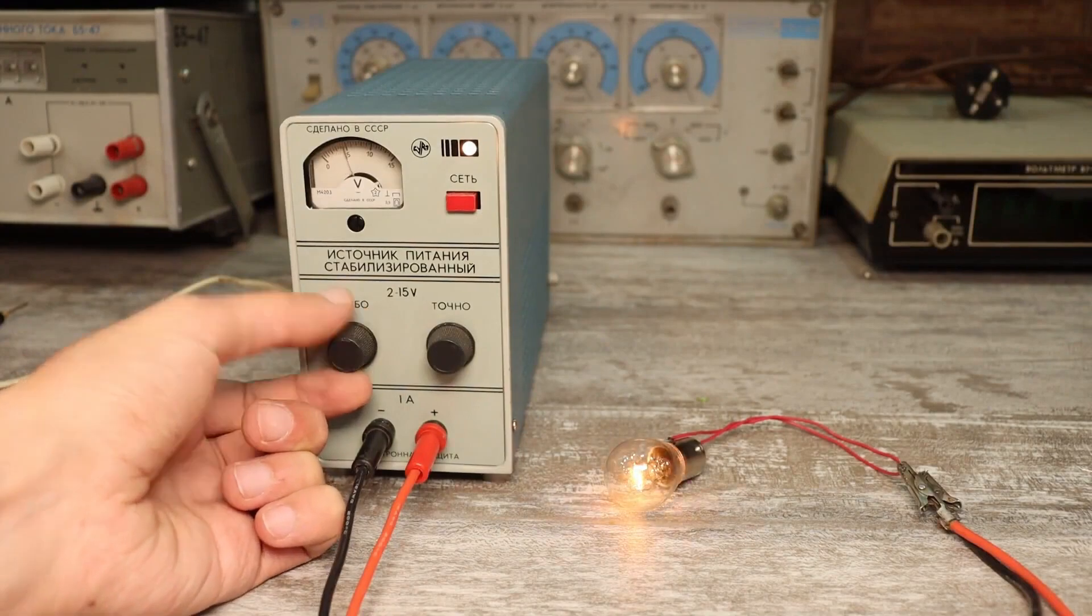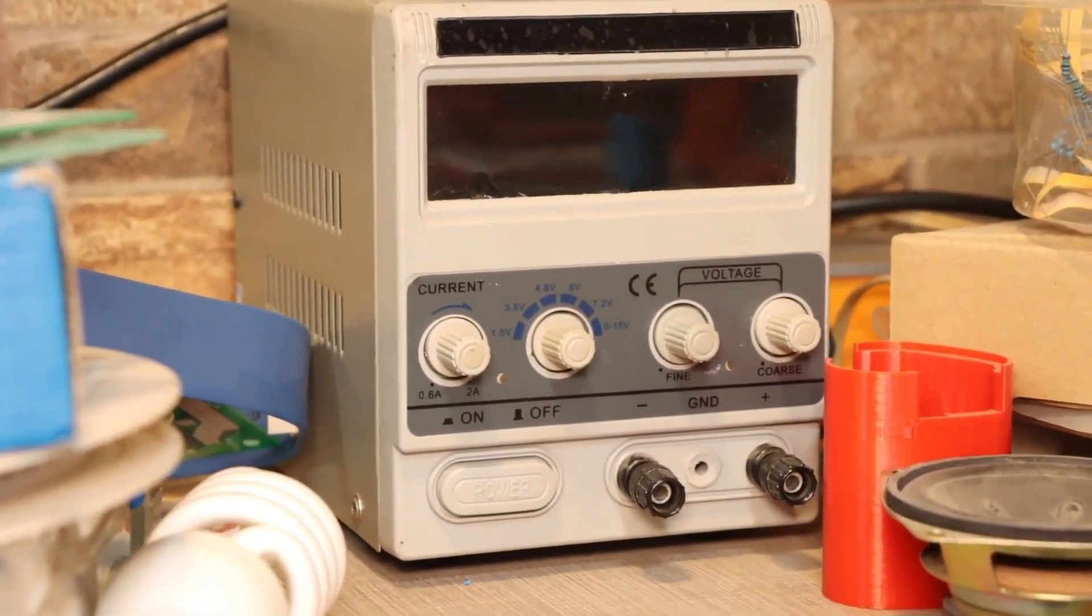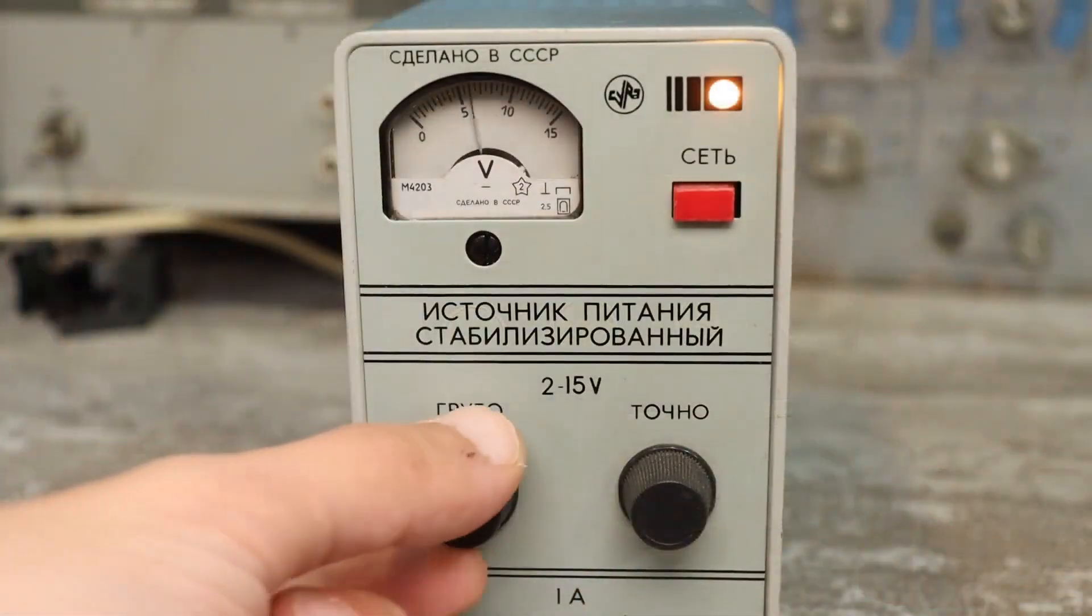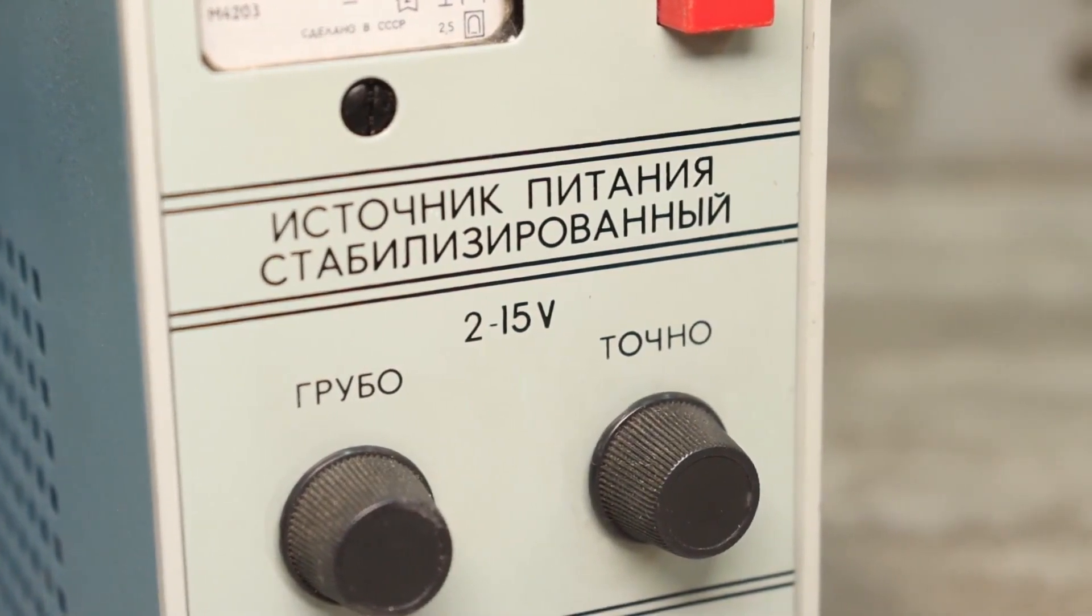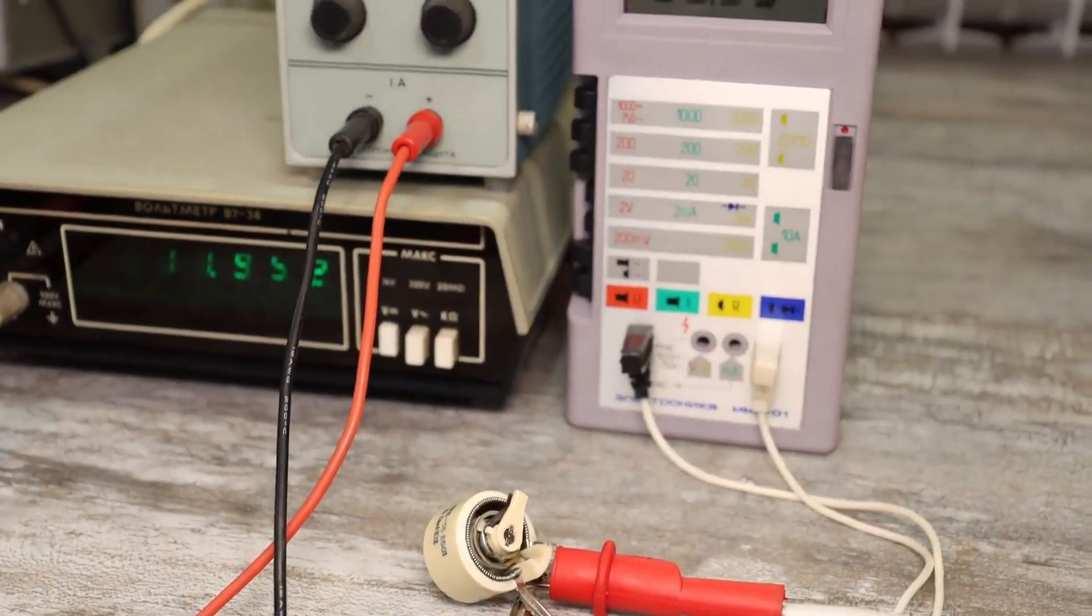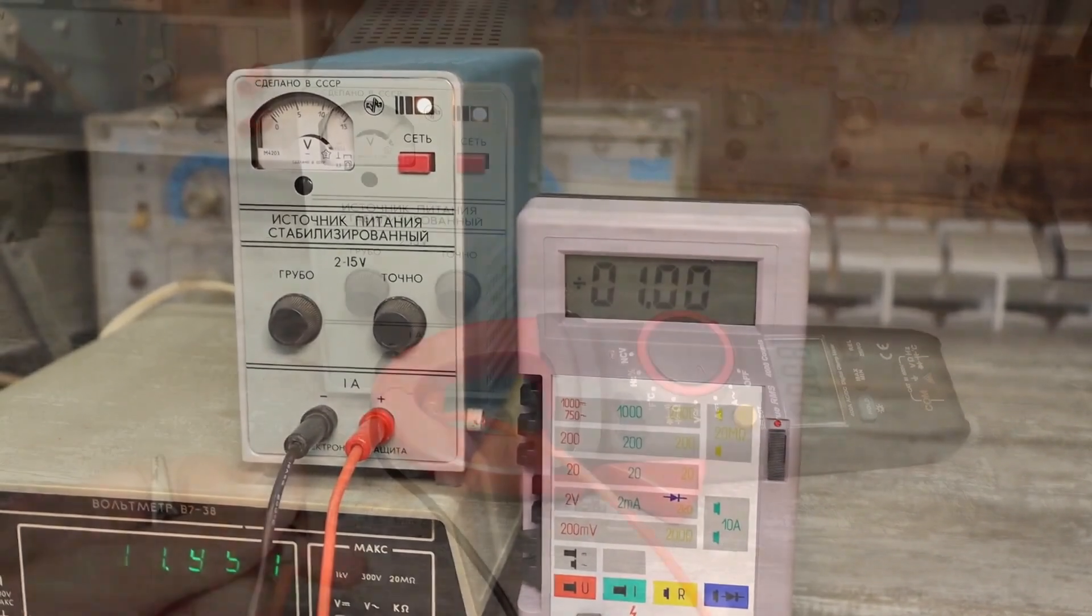In terms of specifications, our unit can be compared to the PS1502 power supplies. The output voltage ranges from 0 to 15 volts, despite the fact that the front panel states it ranges from 2 to 15. The output current is 1 ampere. There is current protection, or more precisely, current stabilization.